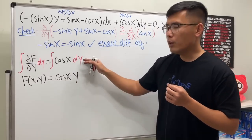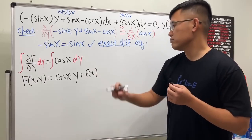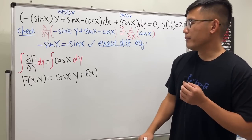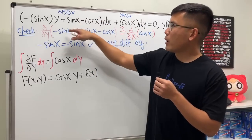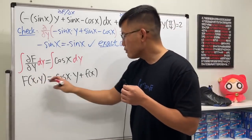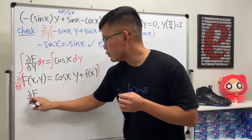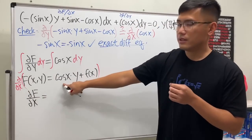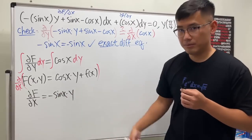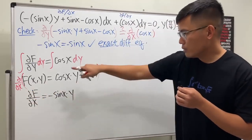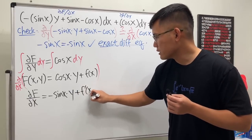On the left-hand side we get capital F, which is a function of two variables x and y. On the right-hand side, in the y-world cosine x is a constant, so we get cosine x times y. We also have to add a function in terms of x only — let's call it f of little x — because any function of x alone is constant in the y-world.